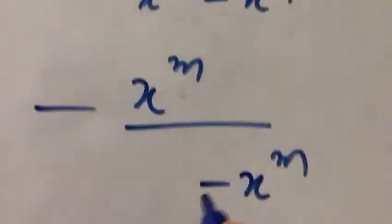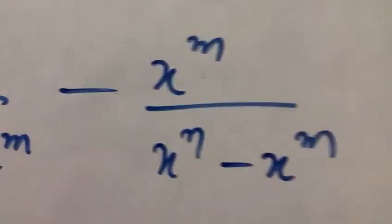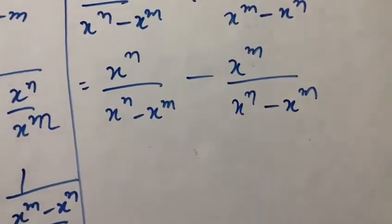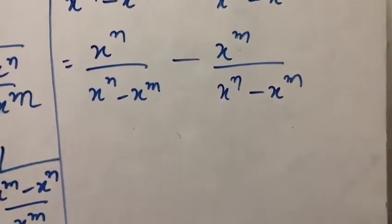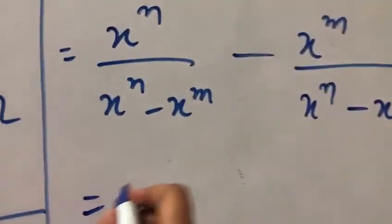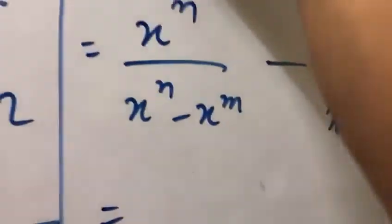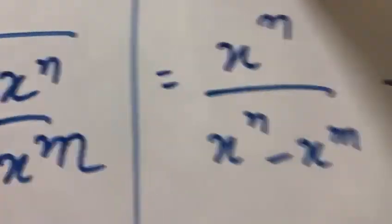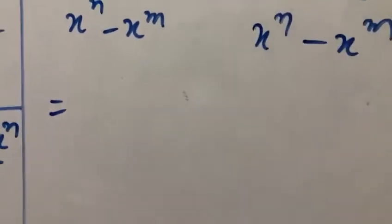Okay, now see, the denominators are the same, so we can combine them easily. We know that if the denominators are the same, for example 1 over 2 plus 3 over 2, we can add the numerators directly.